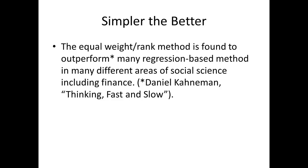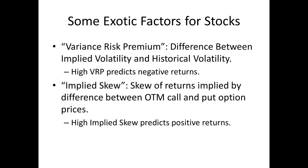Now let's move on to some more exotic factors — factors that a shorter-term trader can actually use. You don't have to be a Warren Buffett to make use of these factors, and you don't have to hold a stock for five years. You can use them for a holding period from a week to several months. The first exotic factor is called variance risk premium — the difference between implied volatility and historical volatility. Generally, a high variance risk premium predicts high negative return: if implied vol exceeds historical vol by a lot, you expect negative returns.